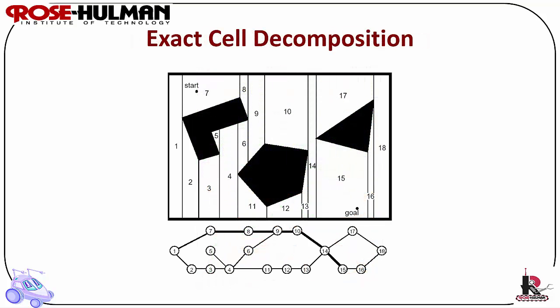Exact cell decomposition uses cell decomposition to discriminate between geometric areas or cells that are free and those that are occupied by objects. Divide space into simple connected regions called cells. Determine which open cells are adjacent and construct a connectivity graph. Find cells in which the initial and goal configuration state lie and search for a path in the connectivity graph to join them.